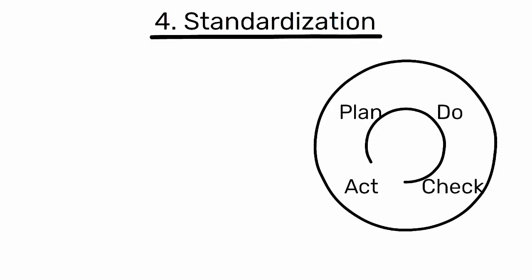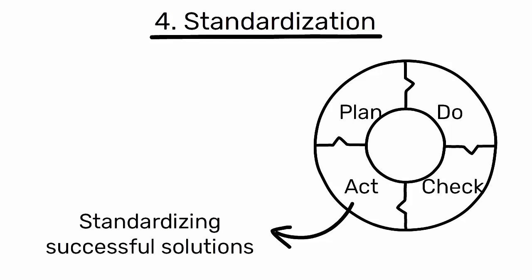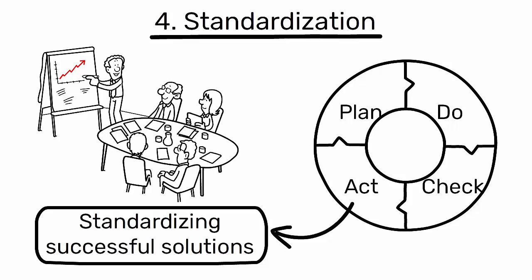4. Standardization. The Act stage of PDCA often involves standardizing successful solutions, another key lean principle. This ensures that improvements are sustained and spread throughout the organization.